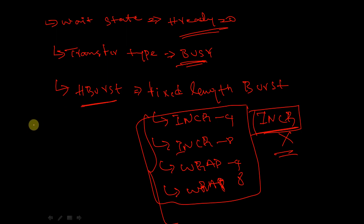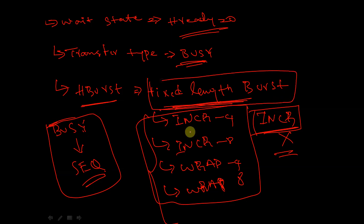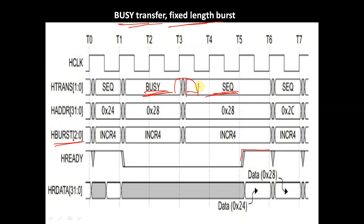The master is allowed to change the transfer type from BUSY to SEQUENTIAL in case of fixed-length burst — that is INCR4, INCR8, WRAP4, WRAP8, INCR16, WRAP16, etc. And when the transfer type is changed, it must remain constant until HREADY gets asserted to 1.